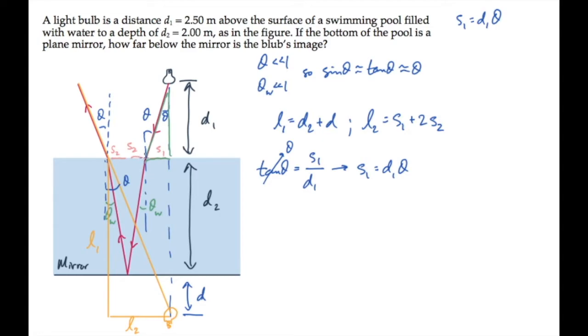Here's another right triangle I'm outlining in green. Notice now that tangent of theta w is s2 over d2. Tangent of theta w is approximately equal to theta w. In the same way, solve this for s2. It equals d2 times theta w.